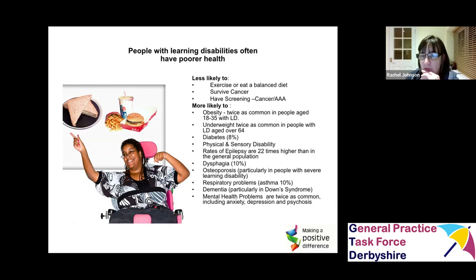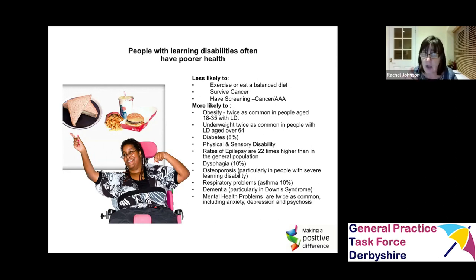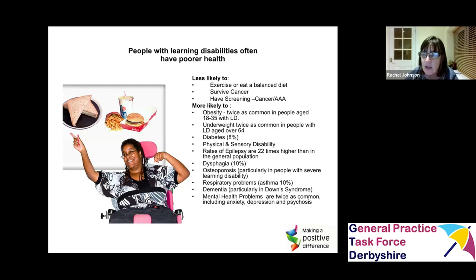Pretty much every other health complication is worse for somebody with a learning disability. There's a higher incidence of diabetes; they are much more likely — 22 times higher than the general population — to have a physical and/or sensory disability; much more likely to receive an epilepsy diagnosis at some point; increased risk of swallowing problems; and higher risks of osteoporosis, respiratory problems, dementia, and mental health problems. The annual health check, if attended regularly, can help highlight some of these problems before they become too severe.